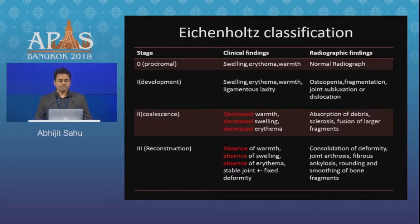In the developmental stage, there is swelling, erythema and warmth with ligamentous laxity. On X-ray, you will see osteopenia, fragmentation, and joint subluxation or dislocation.